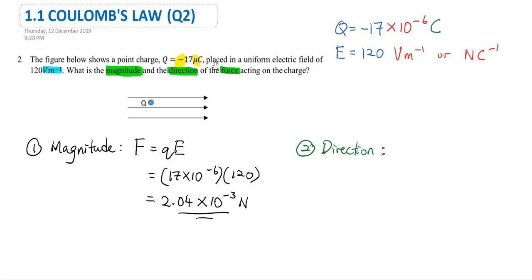Now we gather the quantities. The charge is a negative charge, and it is in micro Coulombs — micro means 10 to the power of negative 6 — so you must convert to SI units. The electric field is 120 volts per meter. Note that the electric field actually has two units: volts per meter and also Newtons per Coulomb.